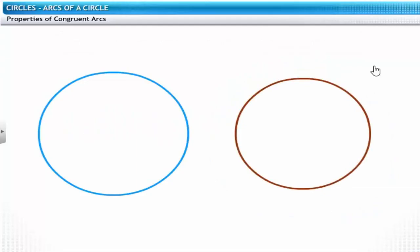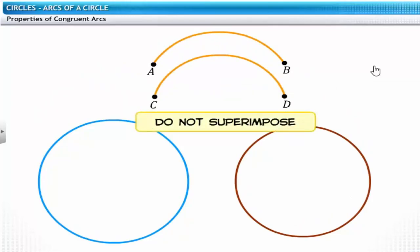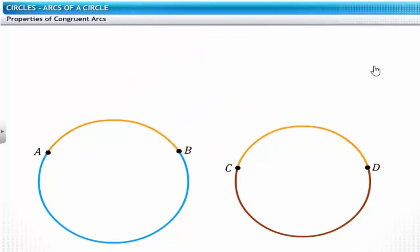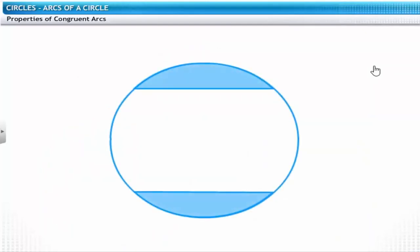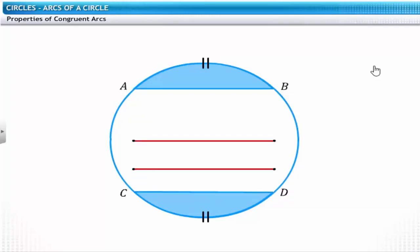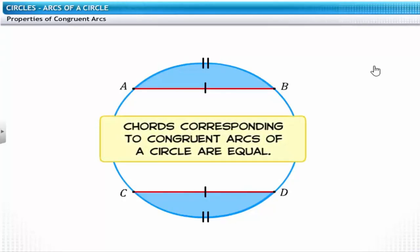Before we study properties of congruent arcs, let us look at the condition of congruency once again. Here are two arcs from two different circles — they are of the same length but do not superimpose each other completely, because these arcs are curved differently. These arcs are not congruent. Returning to our circle, if AB and CD are two congruent arcs, simple measurement shows that AB and CD are equal in length. Thus, chords corresponding to congruent arcs of a circle are equal.